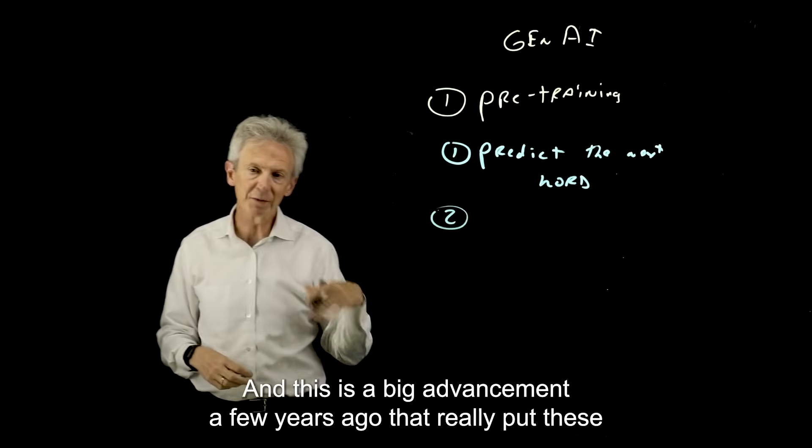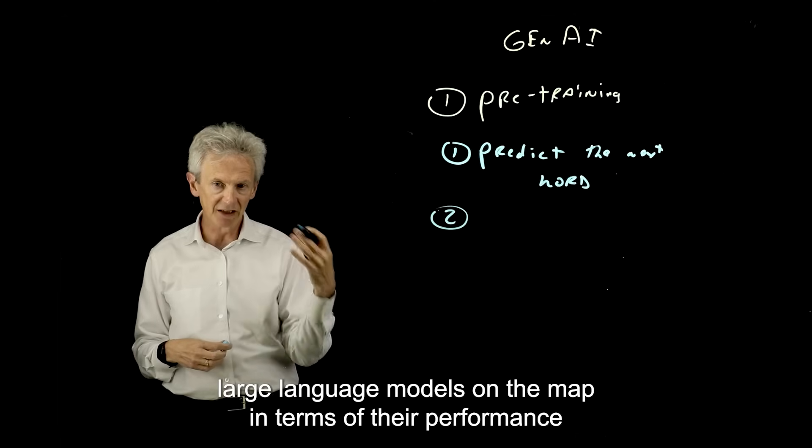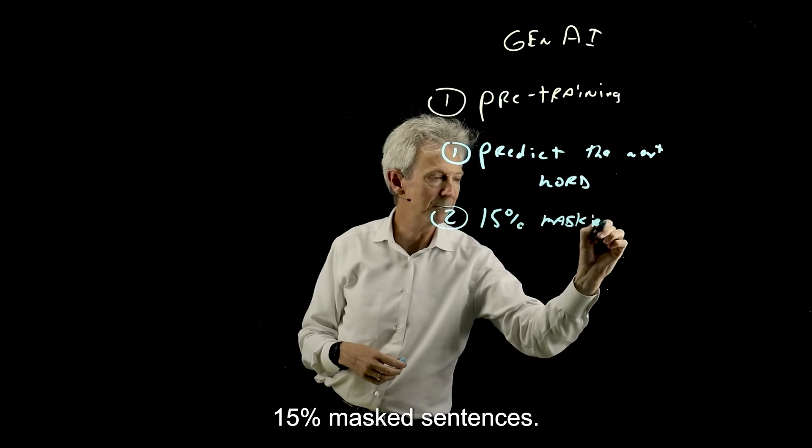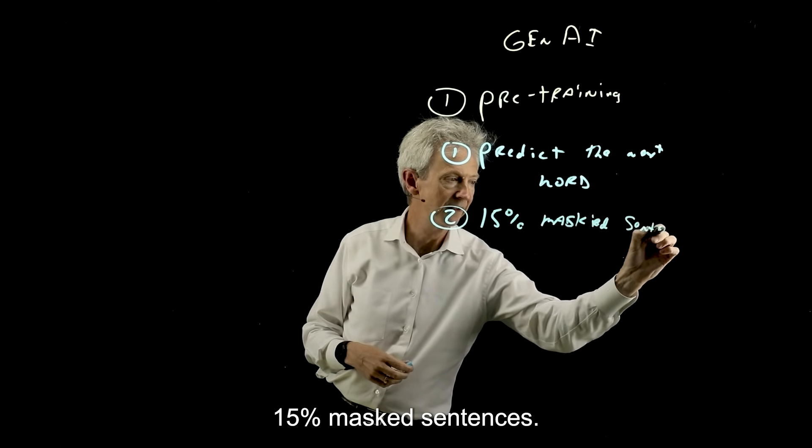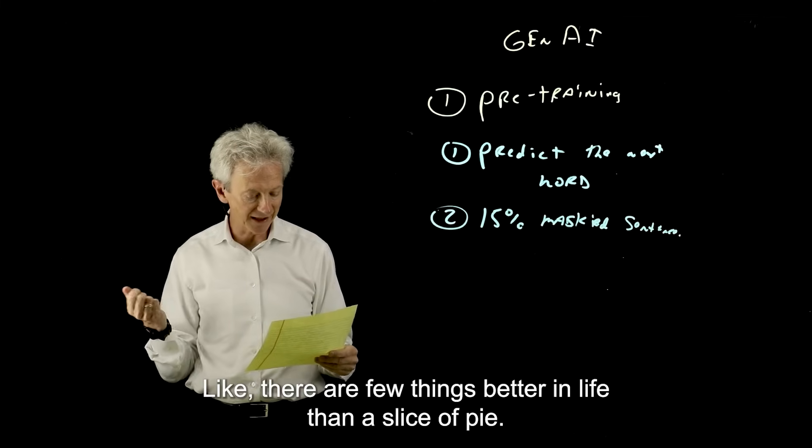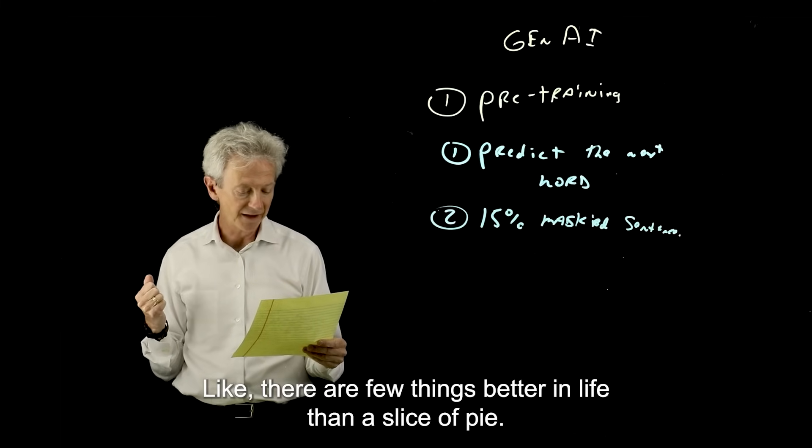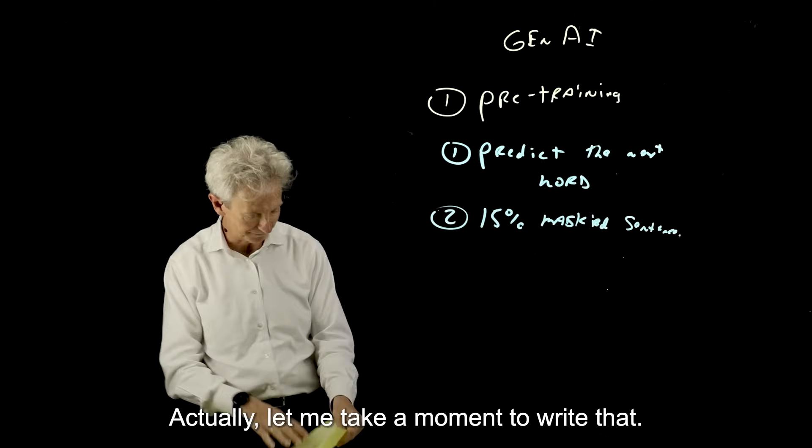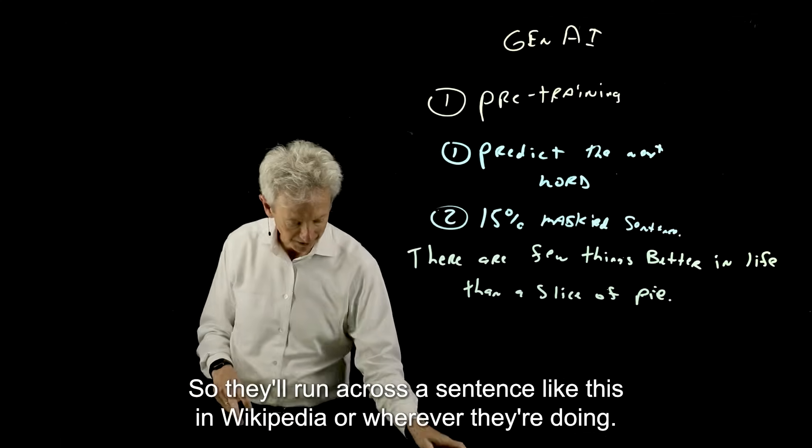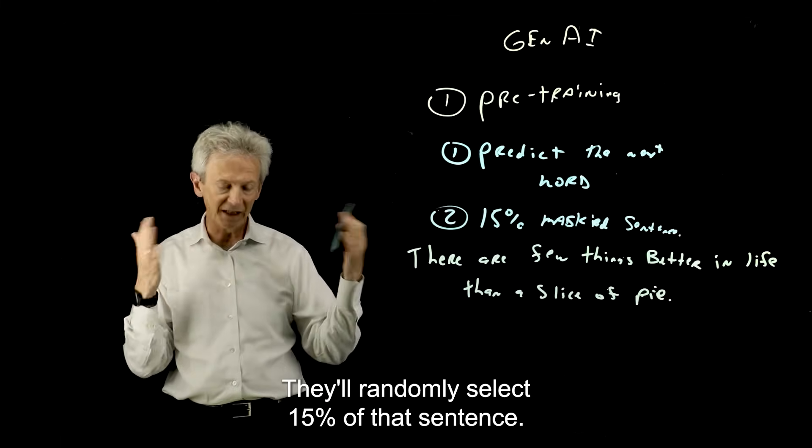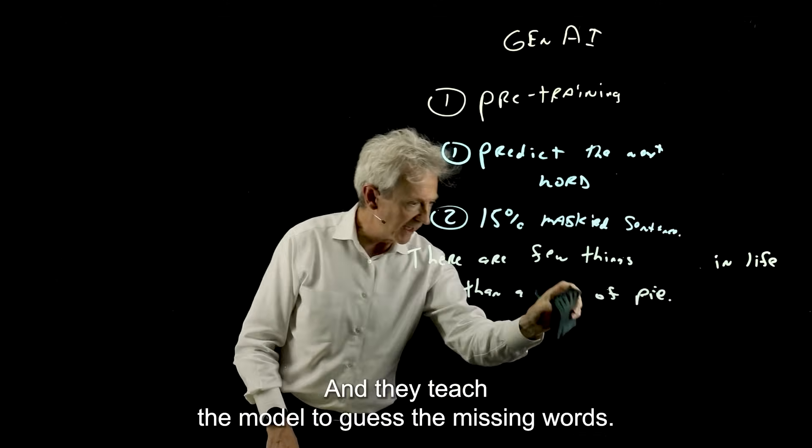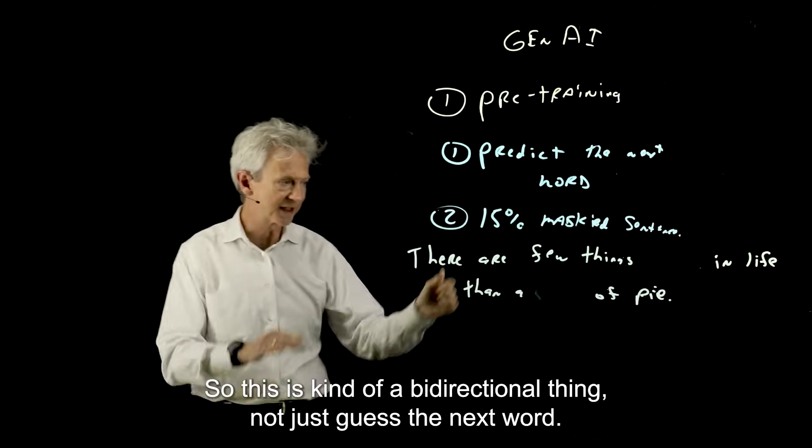The second task, and this was a big advancement a few years ago that really put these large language models on the map in terms of their performance, is masking sentences. 15% masked sentences. So they'll take a sentence. I found a random sentence generator online earlier today. And here's a sentence like, There are few things better in life than a slice of pie. Actually, let me take a moment to write that. There are few things better in life than a slice of pie. So they'll run across a sentence like this in Wikipedia or wherever. They'll randomly select 15% of that sentence. And I did the same thing earlier today. And this is what the 15% knocked off. And they teach the model to guess the missing words. So this is kind of a bidirectional thing, not just guess the next word.